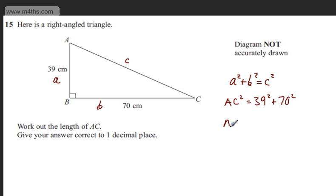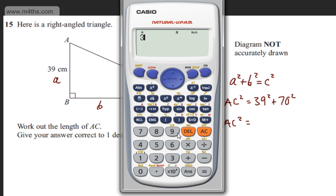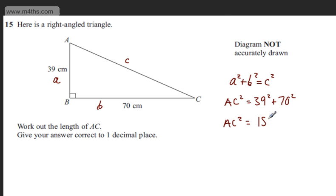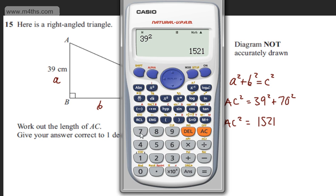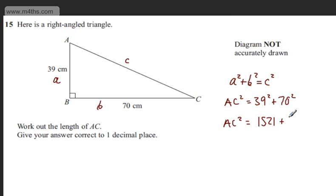So we can say now that AC squared, and showing full workings, just getting a value for each of these, we're going to have 39 squared. That's going to give me 1521, so let's put this in. We've got 1521, then 70 squared, and again, if you want to work this out in a calculator, you can do 4900.